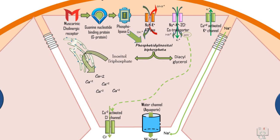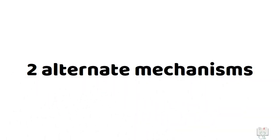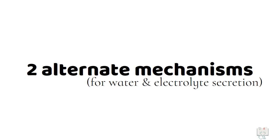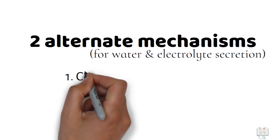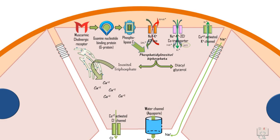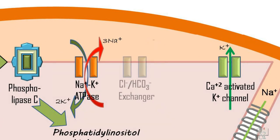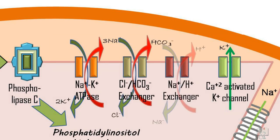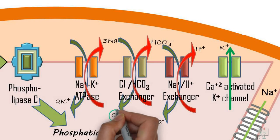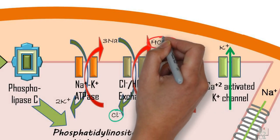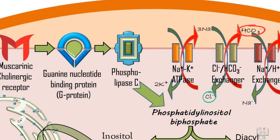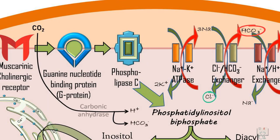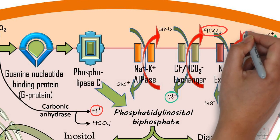Two alternate mechanisms are known to work based on the same osmotic coupling principle. The first differs in the chloride entry step: the sodium-potassium-2-chloride co-transporter is replaced by a chloride-bicarbonate exchanger and a sodium-hydrogen exchanger. The intracellular chloride concentration is maintained by the chloride-bicarbonate ion exchanger. The loss of bicarbonate ion is replenished by diffusion of carbon dioxide into the cell and its conversion into bicarbonate ion and hydrogen ion by carbonic anhydrase. The hydrogen ion is pumped out by the sodium-hydrogen ion exchanger.